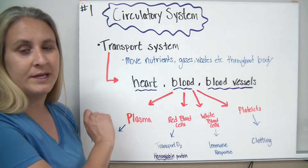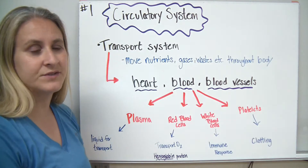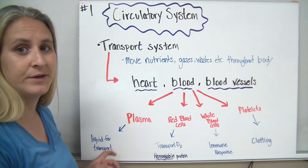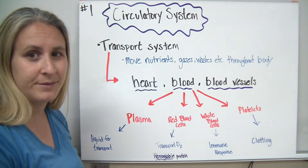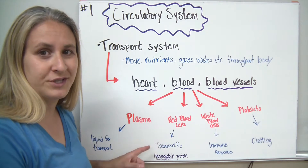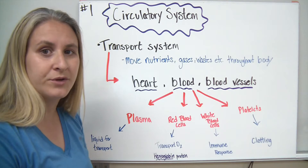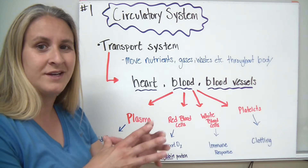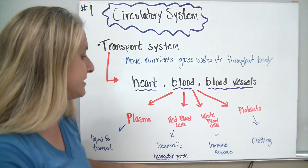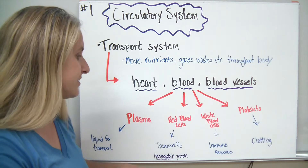Our transport system is made up of three main things: the heart, the blood, and the blood vessels. Blood can be divided into four main things. First is plasma, which is the liquid portion, primarily made up of water. Second are red blood cells, which are used to transport oxygen. They transport oxygen primarily using a protein called hemoglobin, which attaches to oxygen molecules to deliver them around the body to the cells. It will also attach carbon dioxide to bring it back to the lungs to be released.